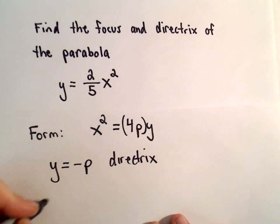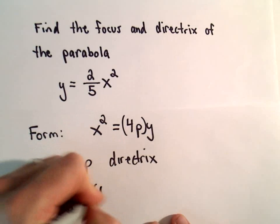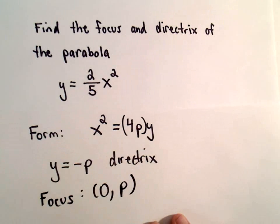it turns out that the line y equals negative p is going to be the directrix. And it says the focus for this type of parabola is going to be at the point 0, p.